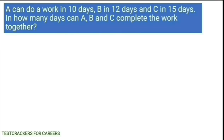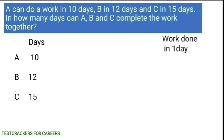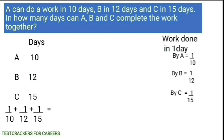A can do a work in 10 days, B can do the same work in 12 days and C in 15 days. We have to find out in how many days A, B and C can complete the work together. The work done in 1 day by A is 1 by 10, B is 1 by 12 and C is 1 by 15. So the work done in 1 day by A, B and C is 1 by 10 plus 1 by 12 plus 1 by 15, which is equal to 1 by 4. The time taken is the inverse of 1 by 4, which is 4 days.